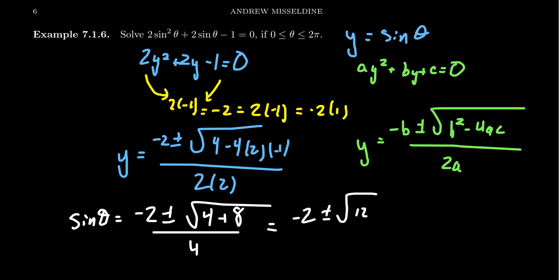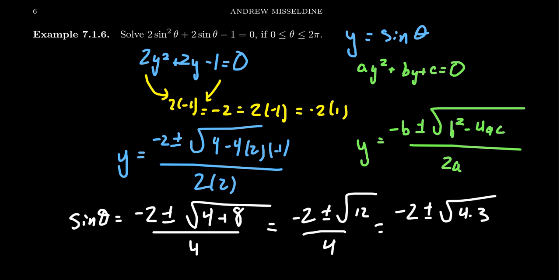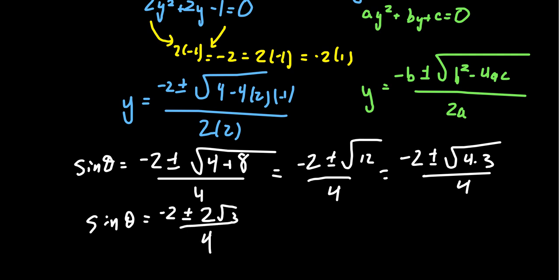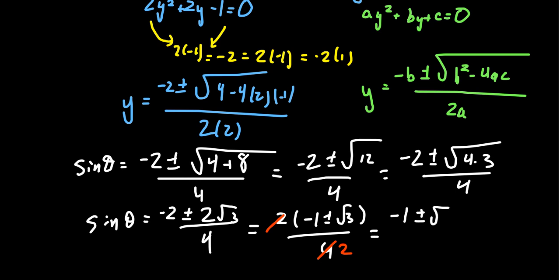It might be tempting to cancel a factor of 2 now, but we can only do that if the entire numerator is divisible by 2. To see that it is, we first simplify the square root. 12 is not a perfect square — and that's exactly why we couldn't factor earlier. However, 12 = 4 × 3, and √4 = 2, so √12 = 2√3. We then get sin(θ) = [−2 ± 2√3] / 4. Factor out 2 from the numerator: [2(−1 ± √3)] / 4, and the 2s cancel to give sin(θ) = (−1 ± √3) / 2.